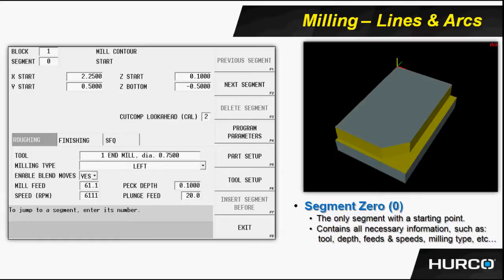Segment zero is the only segment where we're going to determine a starting point. Everything from this point on, beginning with segment one, will be end points. Segment zero also contains all the necessary information such as tooling, depth, speeds and feeds, milling type, and whether or not we're enabling blending moves. This is also the only segment where we can change the tool number or add a finish tool. Think of segment zero as the beginning of the profile.